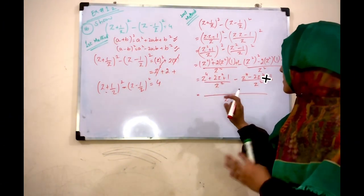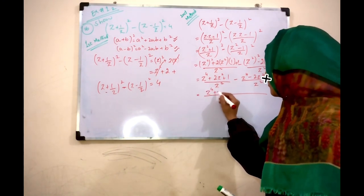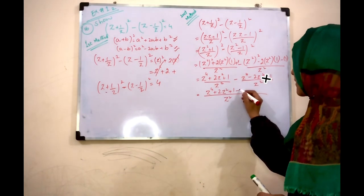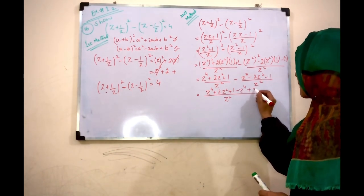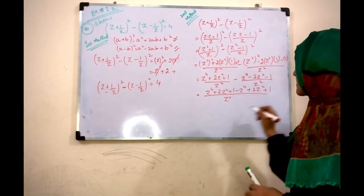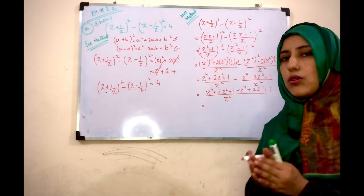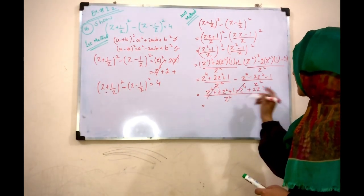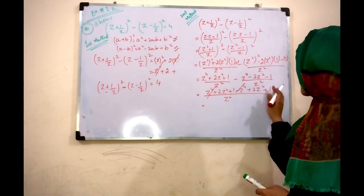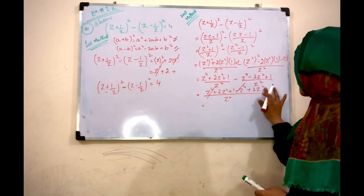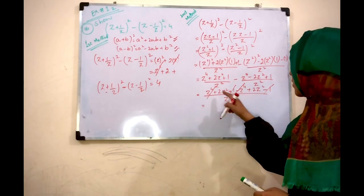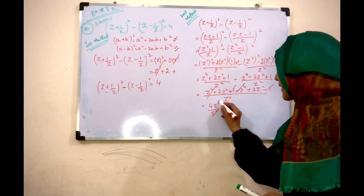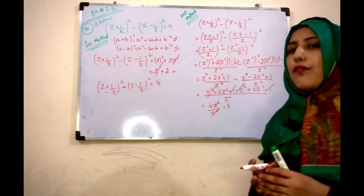Here comes z⁴ plus 2z² plus 1 divided by z² minus z⁴ minus 2z² plus 1 divided by z². z⁴ minus z⁴ cancel, 2z² plus 2z² becomes 4z², minus 1 plus 1 cancel. 4z² divided by z² cancels to become 4.